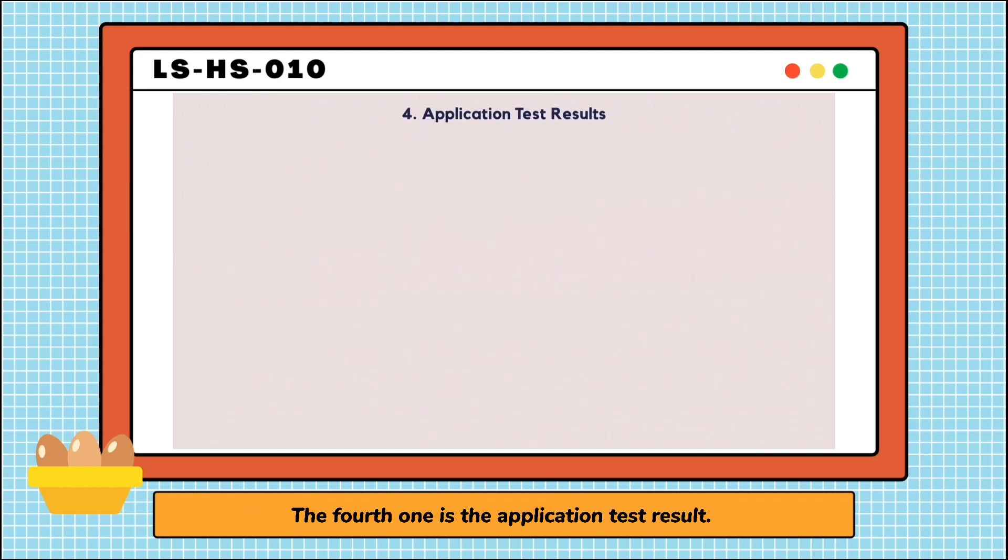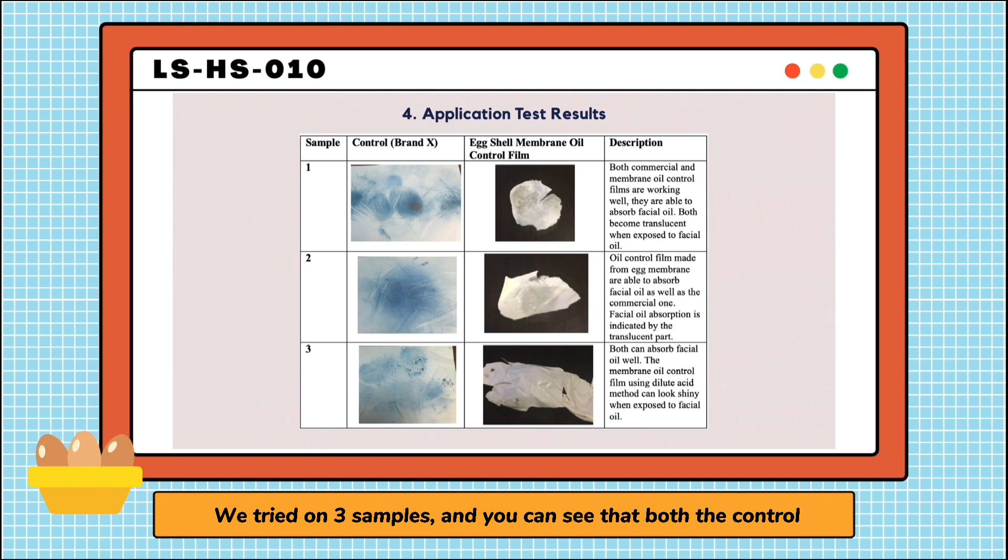The fourth one is the application test result. We tried on three samples. And you can see that both the control and the membrane oil control film are able to absorb facial oil well. In sample 1 and 2, we can see in the membrane that it becomes translucent when exposed to facial oil. In sample 3, we can see the shine in the membrane when exposed to facial oil.